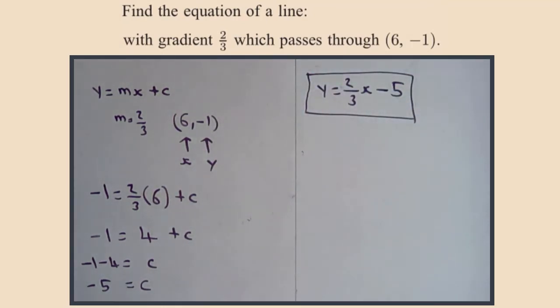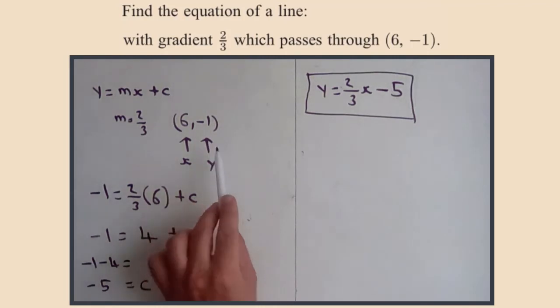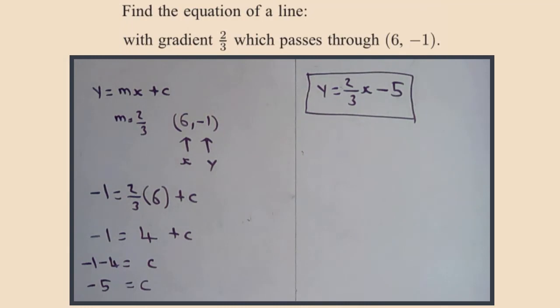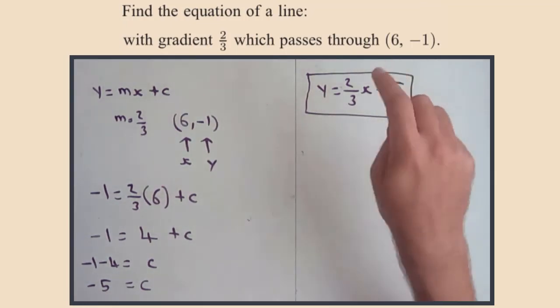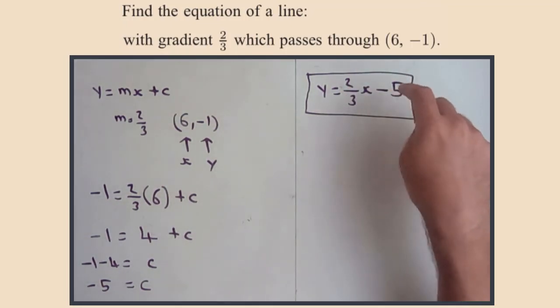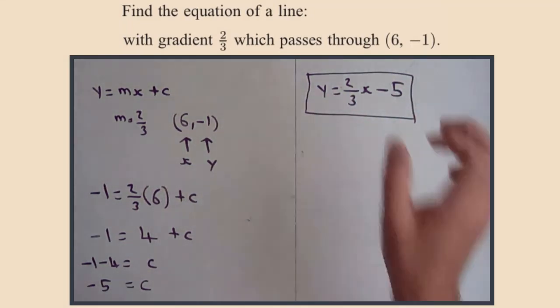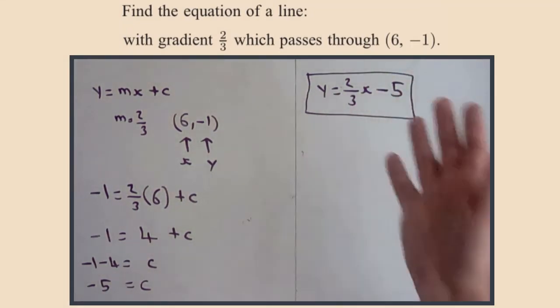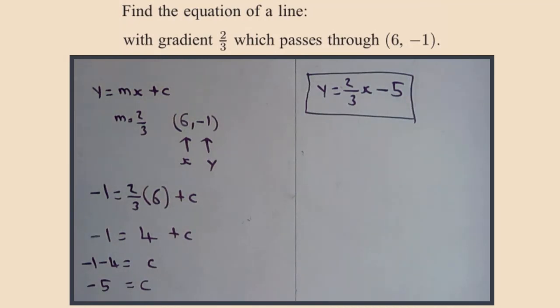Okay. Another trap sometimes people fall into: they might end up writing something like minus one equals two-thirds of six minus five. That doesn't work. The point of an equation of a line is something that works for any point on that line. So this tells me that whatever the x value is, I times it by two-thirds and I take away five, and I will find the y value. This works everywhere on that line, and if it ever doesn't work, then your point is not on that line.